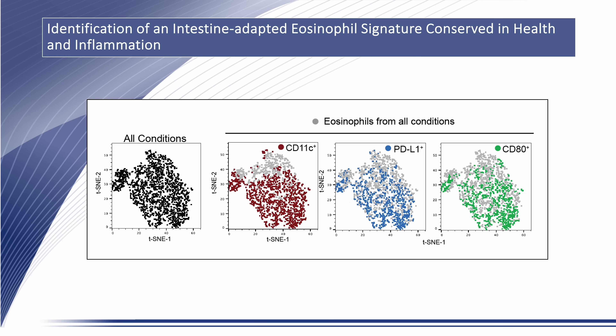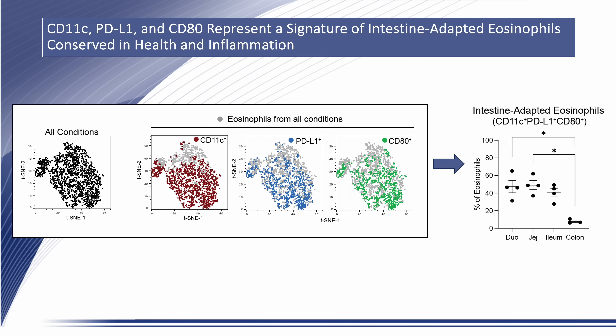Among total eosinophils across all conditions, PD-L1 and CD80 exhibited the highest degree of co-localization with CD11C, thus identifying CD11C, PD-L1, and CD80 co-expression as a core surface receptor signature that identifies intestine-adapted eosinophils irrespective of inflammatory status. We confirmed the CD11C, PD-L1, CD80 intestine-adapted subset in a separate cohort of mice and demonstrated their spatial distribution, revealing decreasing frequencies of the intestine-adapted phenotype among eosinophils along the length of the small intestine, with near absence in the colon of healthy wild-type mice.